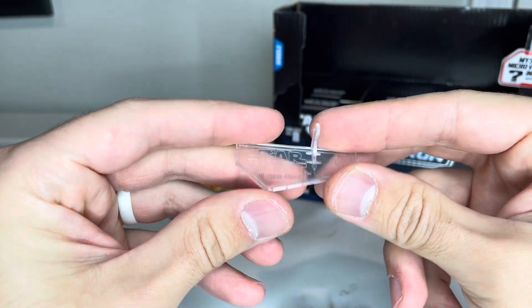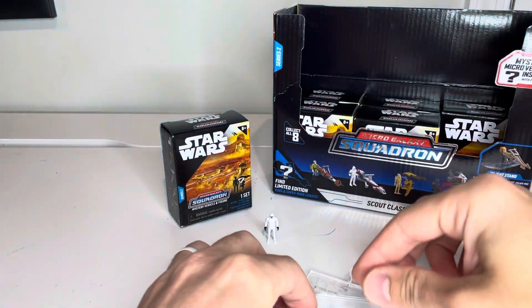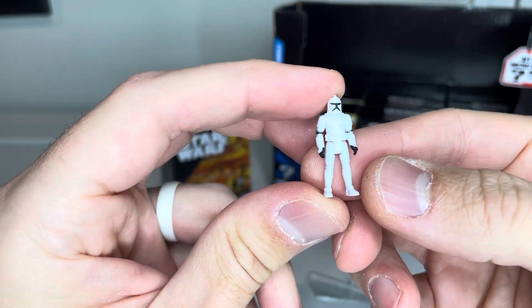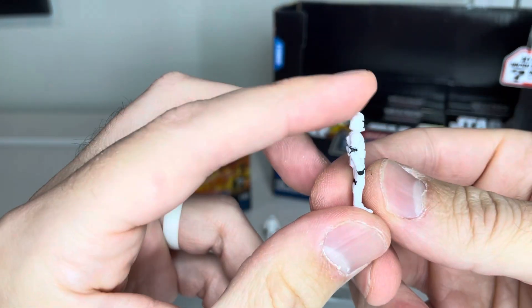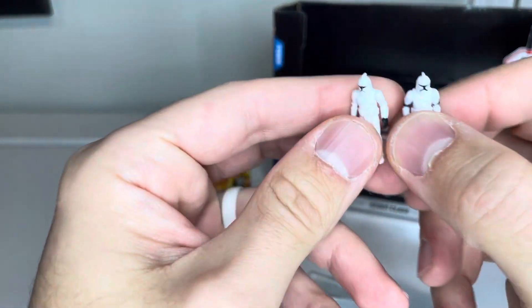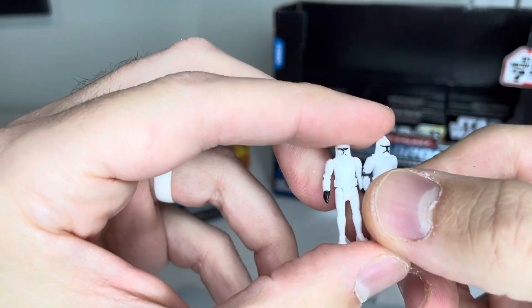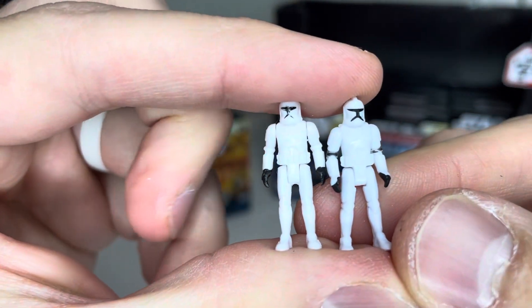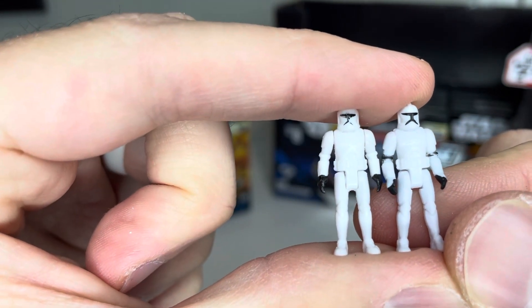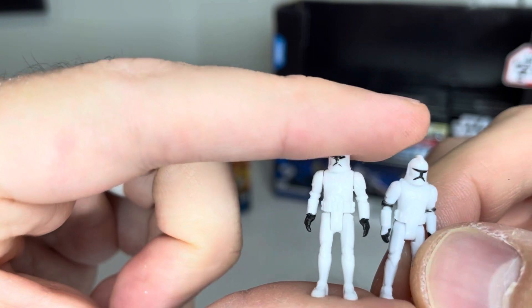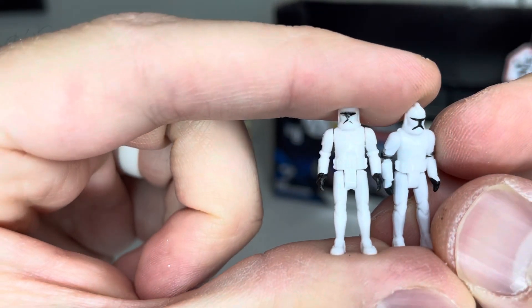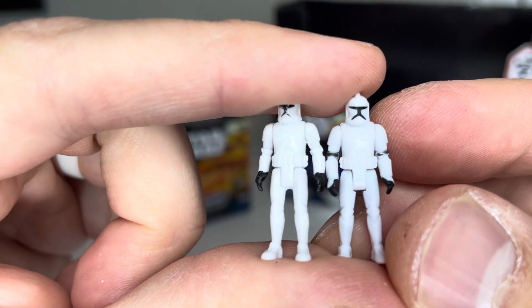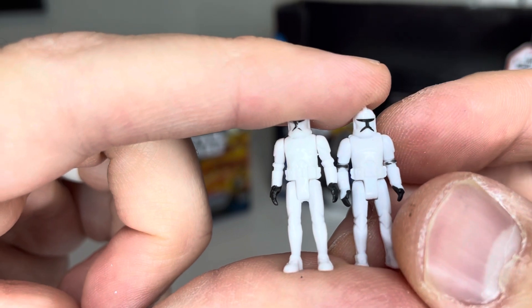Let's do the figure first. Here is the actual Phase 1 figure. We'll do a quick comparison of this one compared to the one that comes with the ATRT. There is just a very slight difference in terms of the quality of the sculpt on it. The one that comes with the BARC speeder, this one here on the right side, has just a little more detail in the knee pads and in the abdominal area as well as the belt.